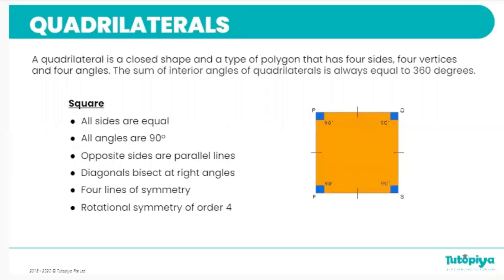Moving on, we're going to be looking at quadrilaterals. Quadrilaterals are shapes that have four sides and four vertices with four angles. Quadrilaterals are a type of polygon — polygons are any closed shape. So a closed shape with four sides, four vertices, and four angles is called a quadrilateral.